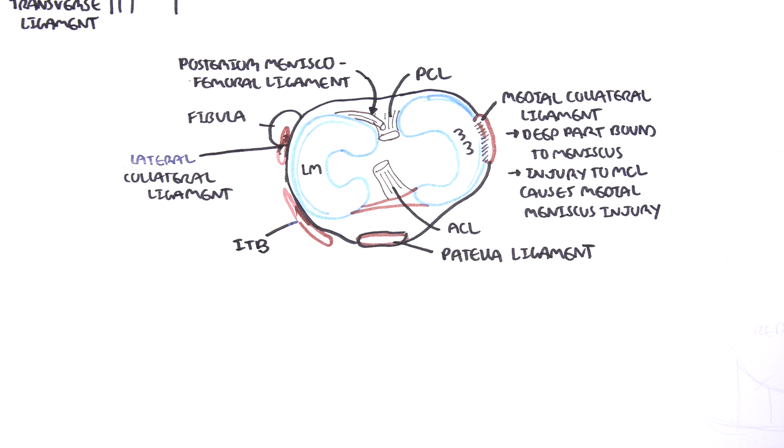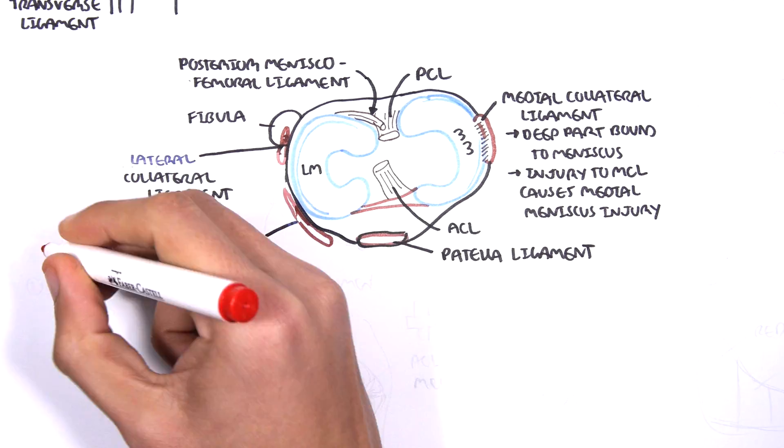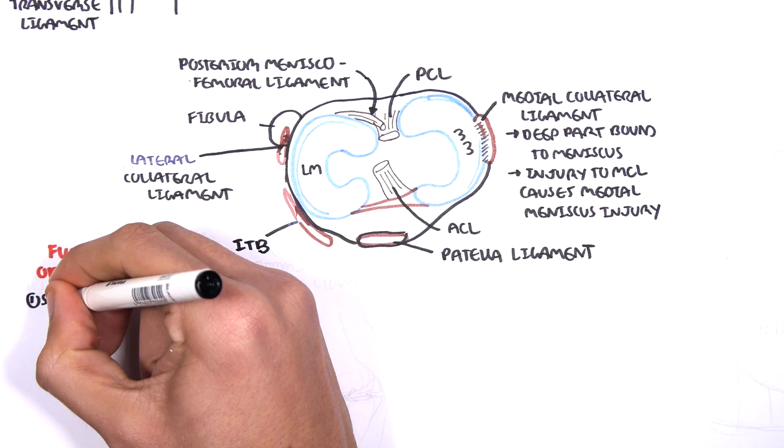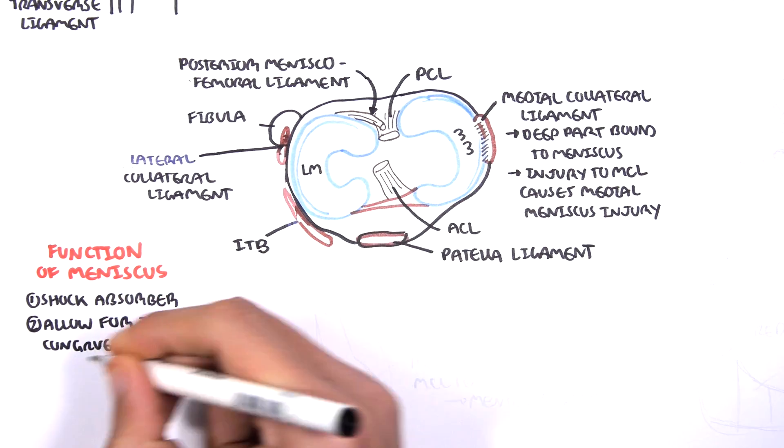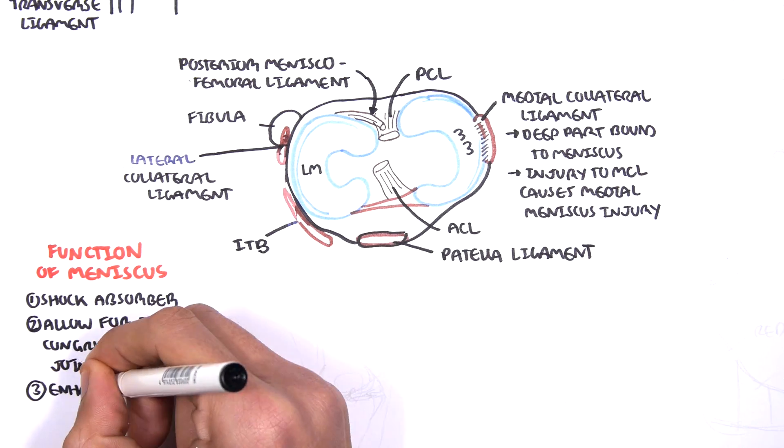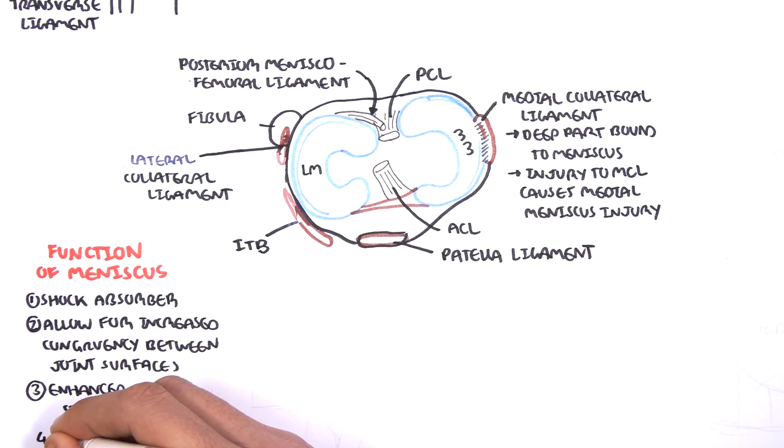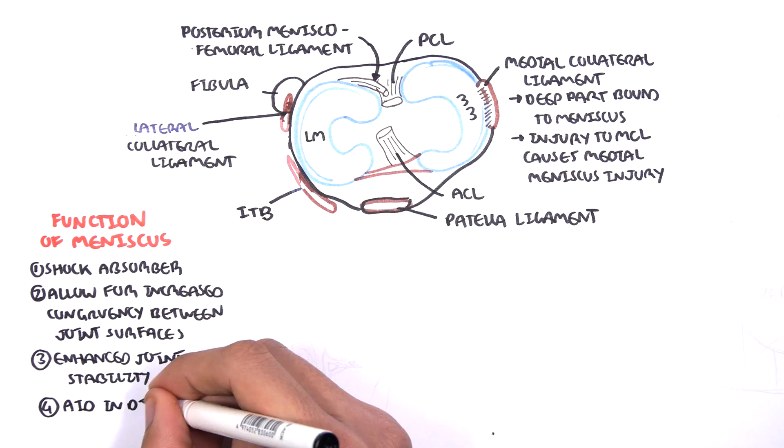Now let us talk about the function of the meniscus, and there are four main functions. One, it absorbs shock, so it's a shock absorber. Two, it allows for increased congruency between joint surfaces. Three, it enhances joint stability. And four, it aids in the distribution of the synovial fluid.